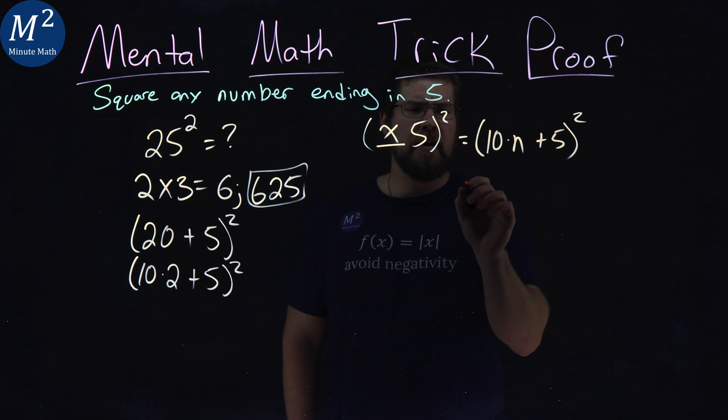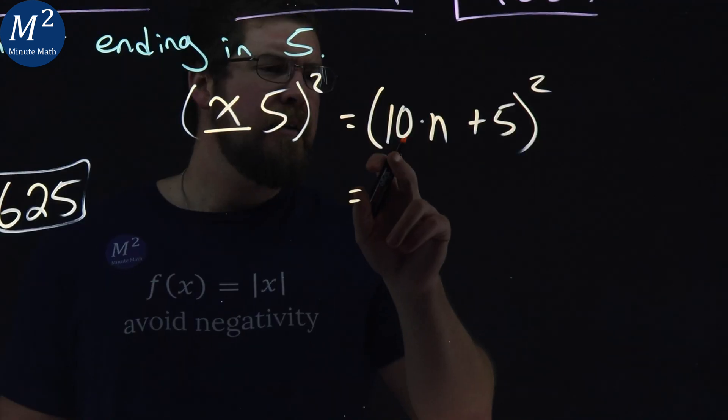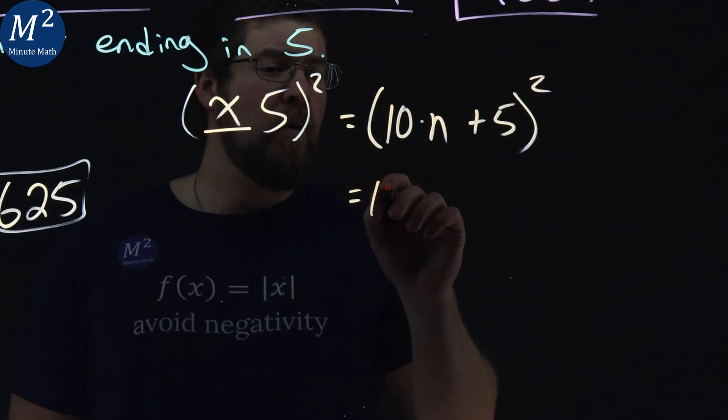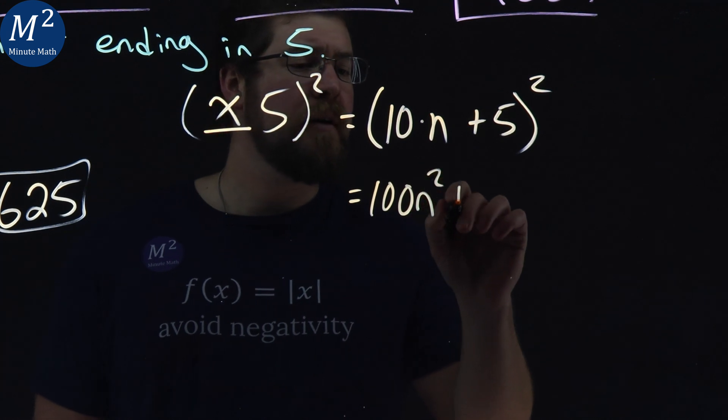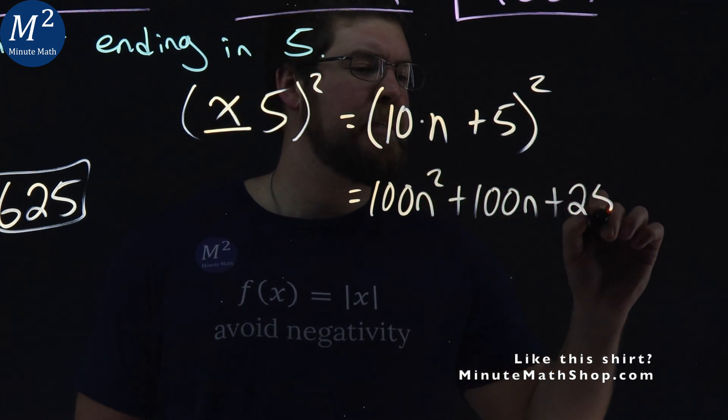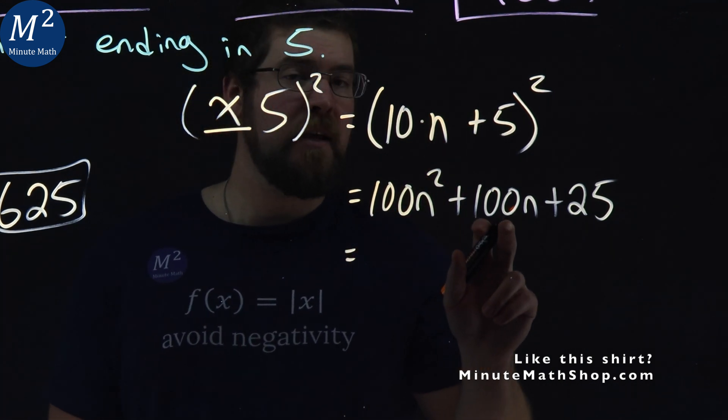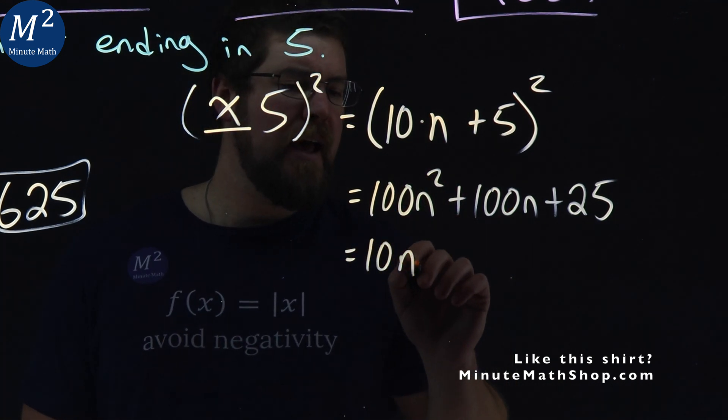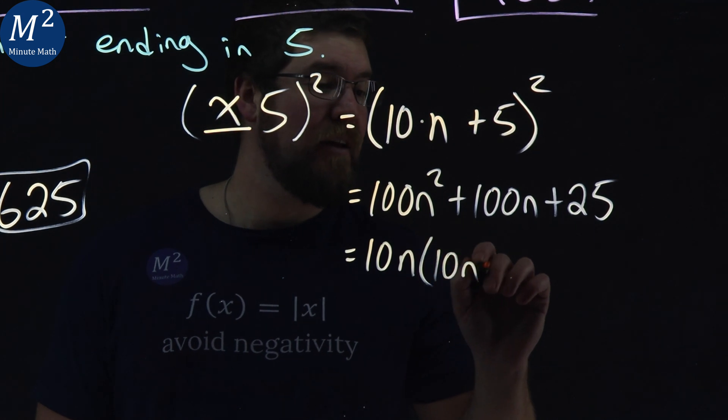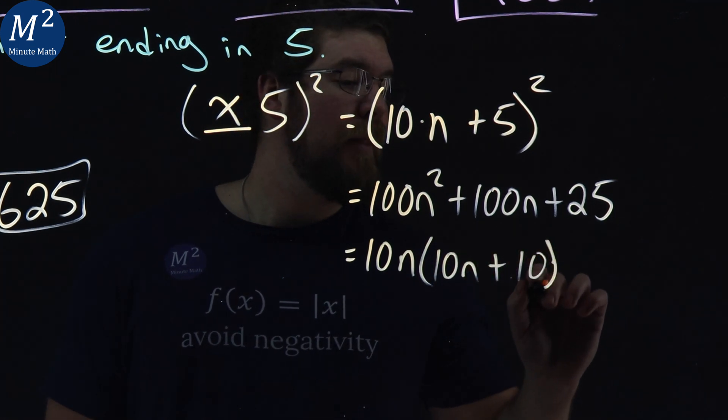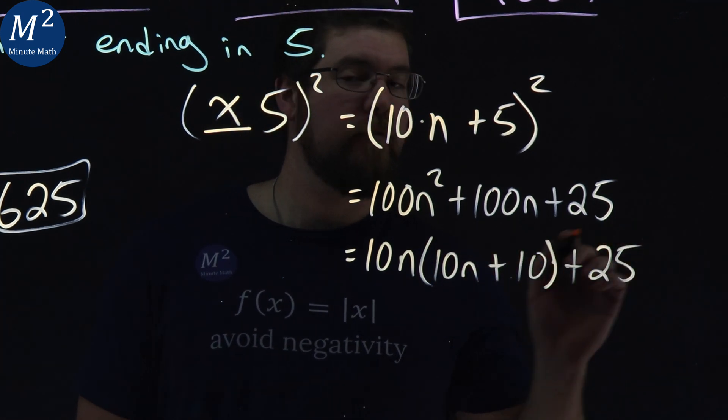So let's simplify this out. 10n plus 5 all squared is 100n squared plus 100n plus 25. Now I'm going to pull out a 10n here. So to pull out a 10n, I'm left with 10n plus 10, and then we have a plus 25 here.